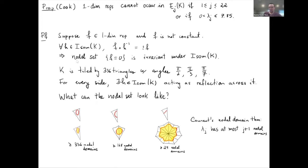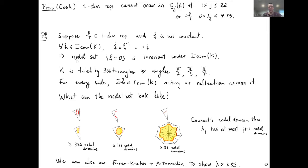So if j is less than 23, the one-dimensional representation cannot occur. The proof of the second statement — the eigenvalue lower bound of 7.85 — is similar, applying the Faber-Krahn inequality to the area of the relevant nodal domain and using Artamachian's inequality to get a lower bound for the eigenvalue.